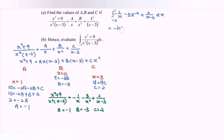So we have negative ln x, plus 3 over x, plus 2 ln |x minus 3|. We have 1 and negative 2 as the bounds.